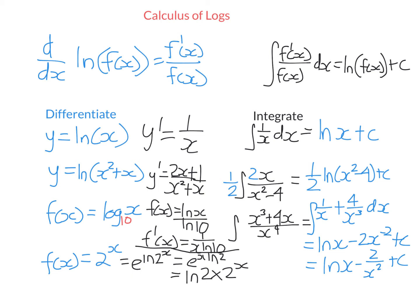Let's now look at logarithmic modelling. Productivity models do a good job of modelling productivity — how much of something you can do. When you learn a new skill, your productivity increases quickly early on but then slows down. Like learning a language, the number of words you know increases a lot to begin with, then slows. Or going to the gym — you make quite a bit of progress at first, but then your progress plateaus. Productivity models use equations of the form y = A + B·ln(t+1), using natural log because it's easy to differentiate, and t+1 so we can substitute t = 0 to get an initial value.